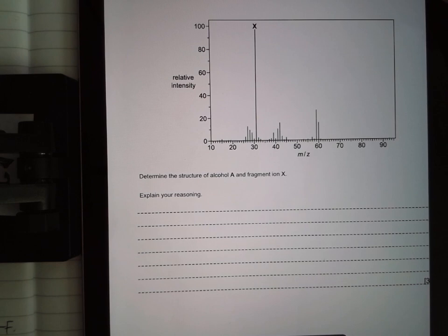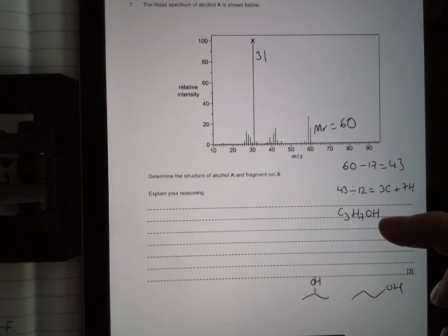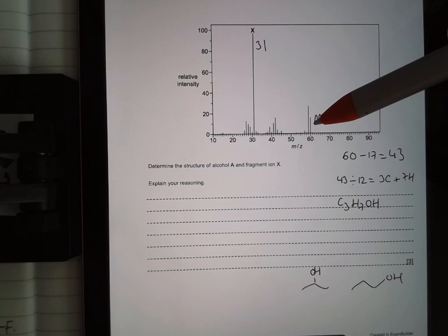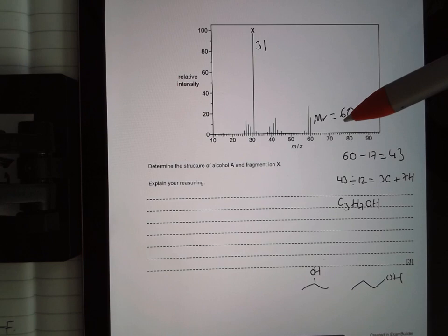Next, on to question number 7. It gives you the mass spectrum of an alcohol, and it wants you to analyze the mass spec and give a structure for alcohol A. The first thing I'm going to do is look and find the molecular formula of my alcohol. So if I go up here to the highest peak, I see my peak is at 60.